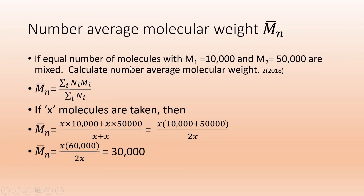The first example is on number average molecular weight — this problem appeared in 2018. The problem is: if equal number of molecules with M1 = 10,000 and M2 = 50,000 are mixed, we are asked to calculate the number average molecular weight. The formula for number average molecular weight is the weight of all the polymers divided by the total number of molecules, given as summation NiMi divided by summation Ni.